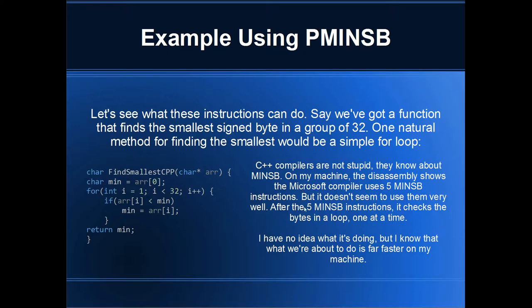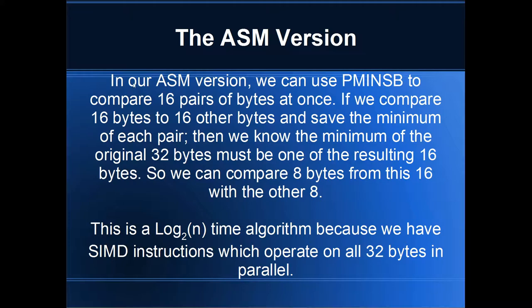I don't know what it's using PminSB for, but it's not doing it very intelligently. In the assembly version we'll go through in detail, we use PminSB to compare 16 pairs of bytes at once. If we compare the first 16 bytes with the final 16 bytes and save the minimum of each pair, then the minimum of the original 32 bytes must be one of those 16. It's something like a comparison network — similar to a sorting network. In the end, this is a log base 2 of n time algorithm because SIMD instructions operate on all 32 bytes in parallel.